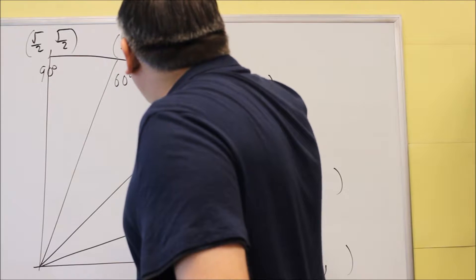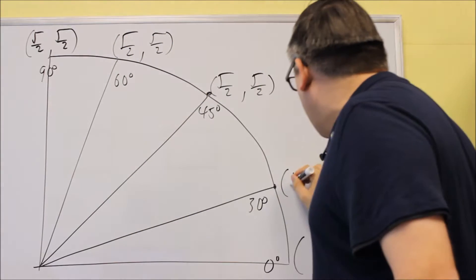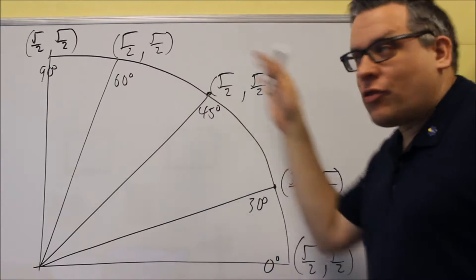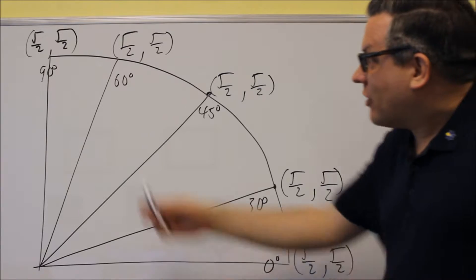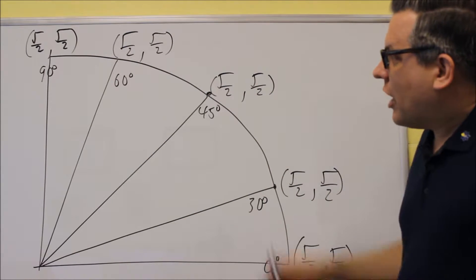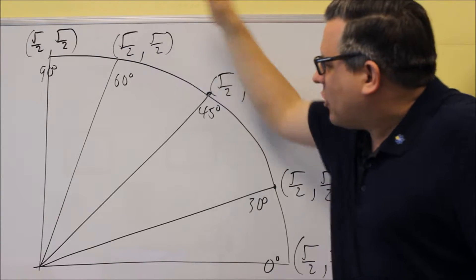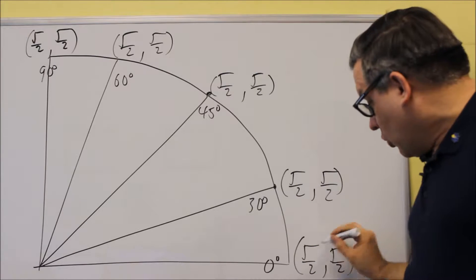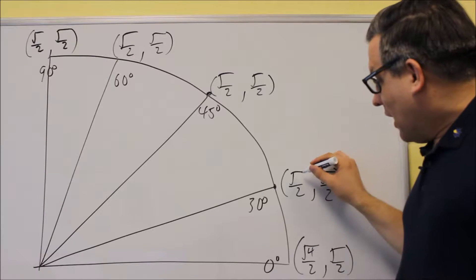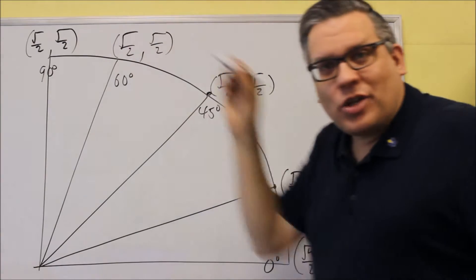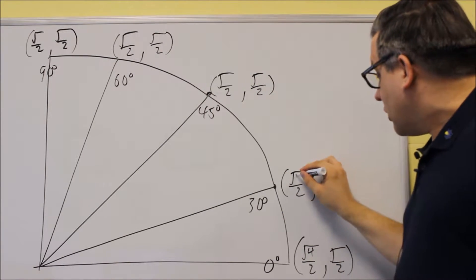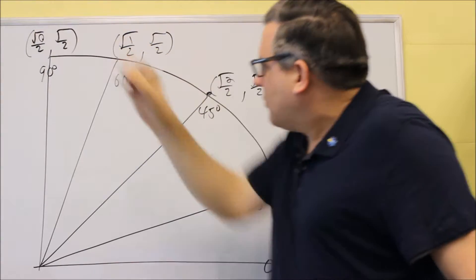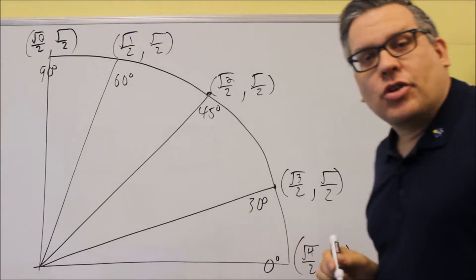We're going to put square root of blank over 2 for all of them. This is the pattern we're going to start with. Down here at 0 degrees, in the first coordinate — the x coordinate — we're going to put in a 4. Then we go down by 1 all the way until we get to 0 at the top. So we have 4, then 3, 2, 1, 0. That's the pattern that we start with there.